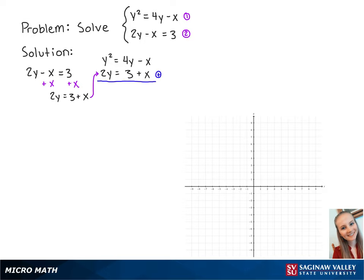Now we're going to add the two equations together so that we have y squared plus 2y equals 4y plus 3. To solve for y, we want to get the right side equal to 0. So we're going to subtract 4y and 3 from both sides so that we have y squared minus 2y minus 3 equals 0.